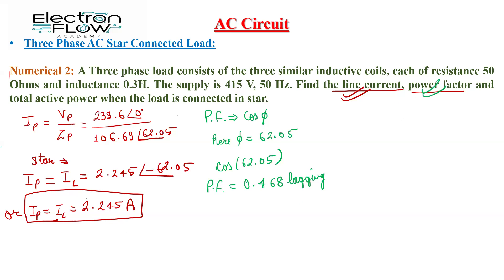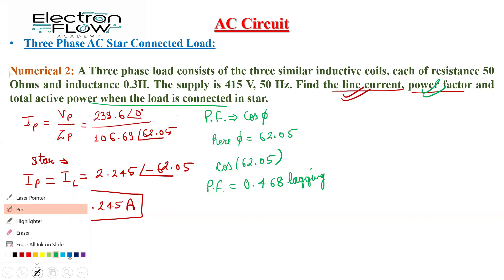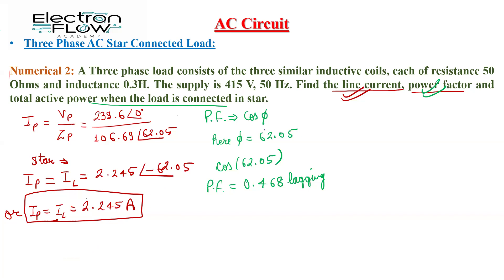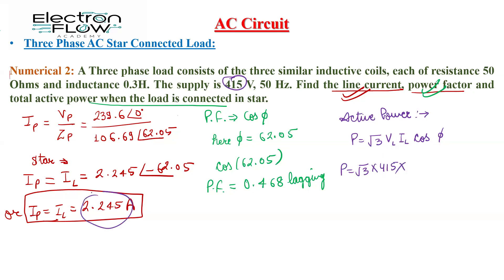This is how we calculated the power factor. Lastly, the question asks us to calculate the total active power when the load is connected in star. The formula for active power is P = √3 × VL × IL × cosφ = √3 × 415 × 2.24 × 0.468, giving us the active power of the circuit.